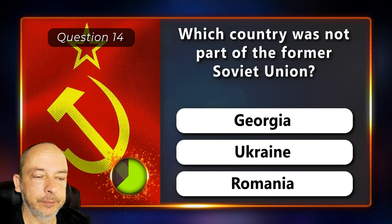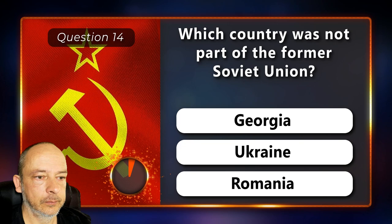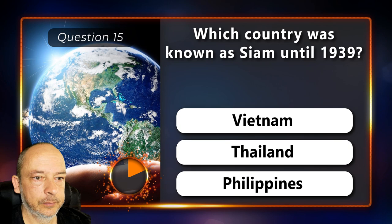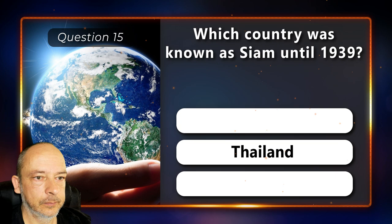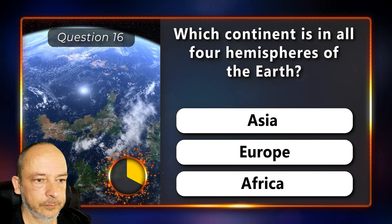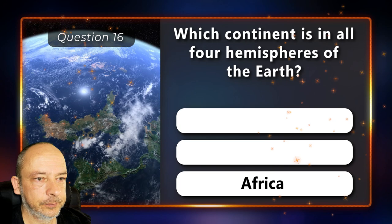Question 14: Which country was not part of the former Soviet Union? Georgia, Ukraine or Romania? Romania. Question 15: Which country was known as Siam until 1939? Vietnam, Thailand or the Philippines? Thailand. Question 16: Which continent is in all four hemispheres of the Earth? Is it Asia, Europe or Africa? Africa.